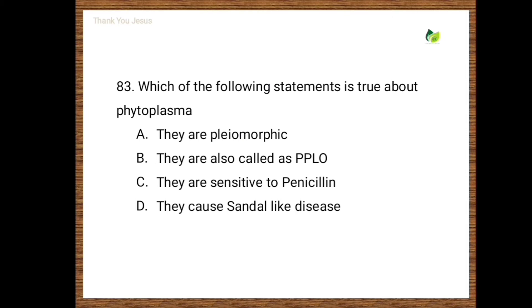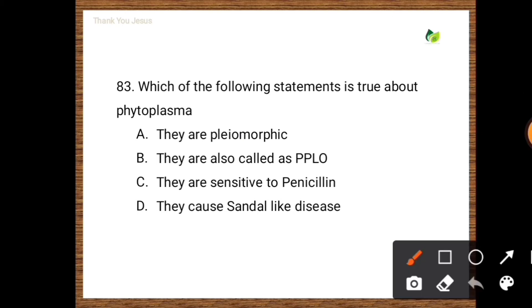Next question: Which of the following statements is true about phytoplasma? They are pleomorphic; also called as PPLO; they are sensitive to penicillin; they cause sandal spike disease. The correct options are: they are sensitive to penicillin, and they cause sandal spike disease.